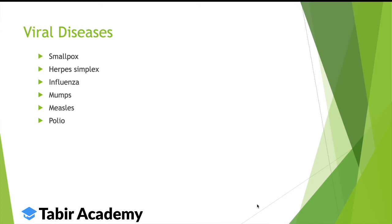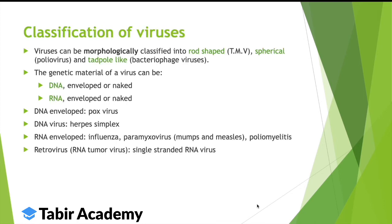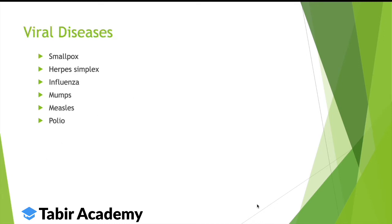Different viral diseases: a viral disease is simply the name of the illness caused by a viral organism. Pox virus causes smallpox. Other examples include herpes simplex, influenza, mumps, measles, and polio. These are just examples of different viral diseases.